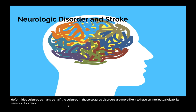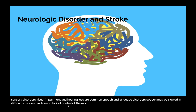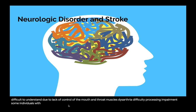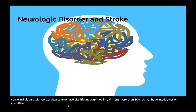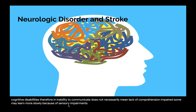Sensory disorders such as visual impairment and hearing loss are common. Speech may be slowed and difficult to understand due to lack of control of the mouth and throat muscles (dysarthria), along with difficulty processing auditory information. Regarding cognitive impairment: more than 50% do not have intellectual or cognitive disabilities, so an inability to communicate does not necessarily mean lack of comprehension. Of those who are not significantly intellectually impaired, some may learn more slowly because of sensory impairments, perceptive cognitive deficiencies, and speech difficulties.